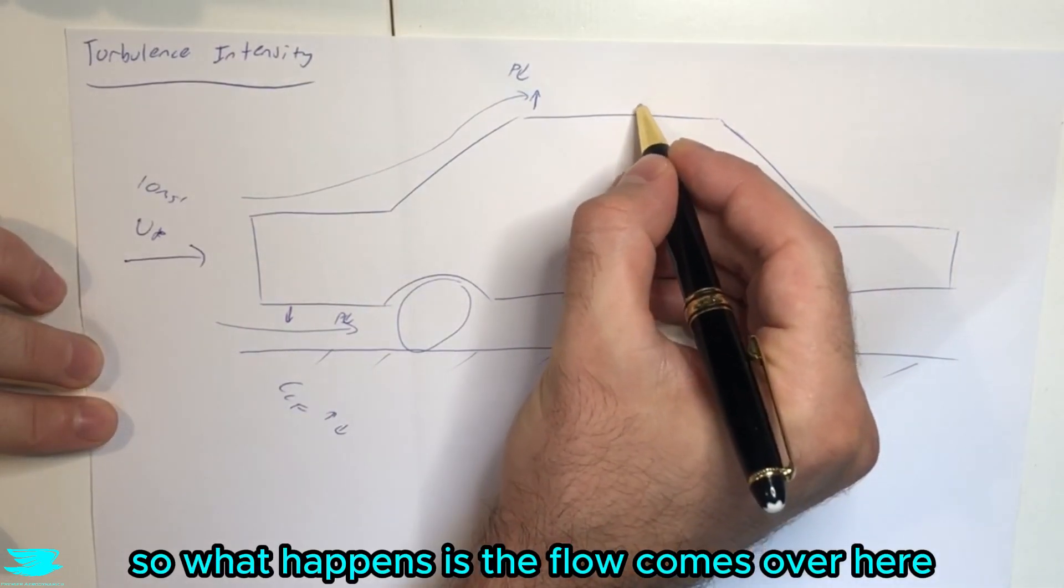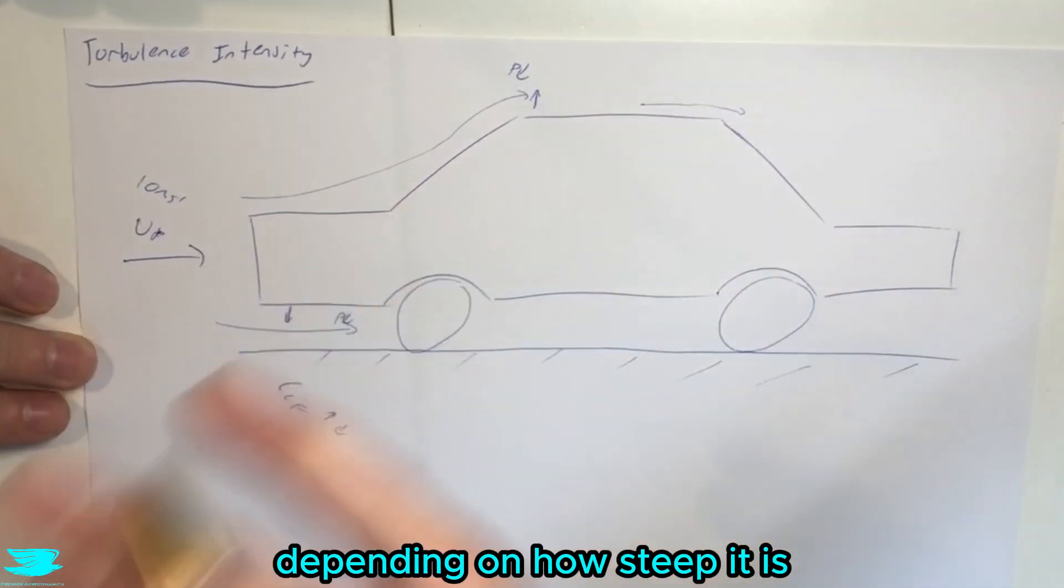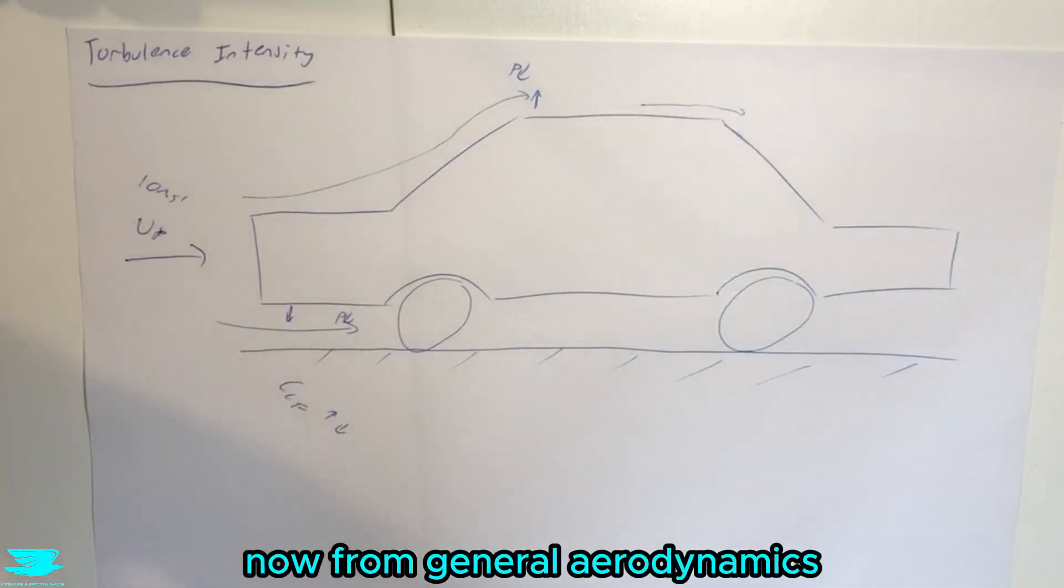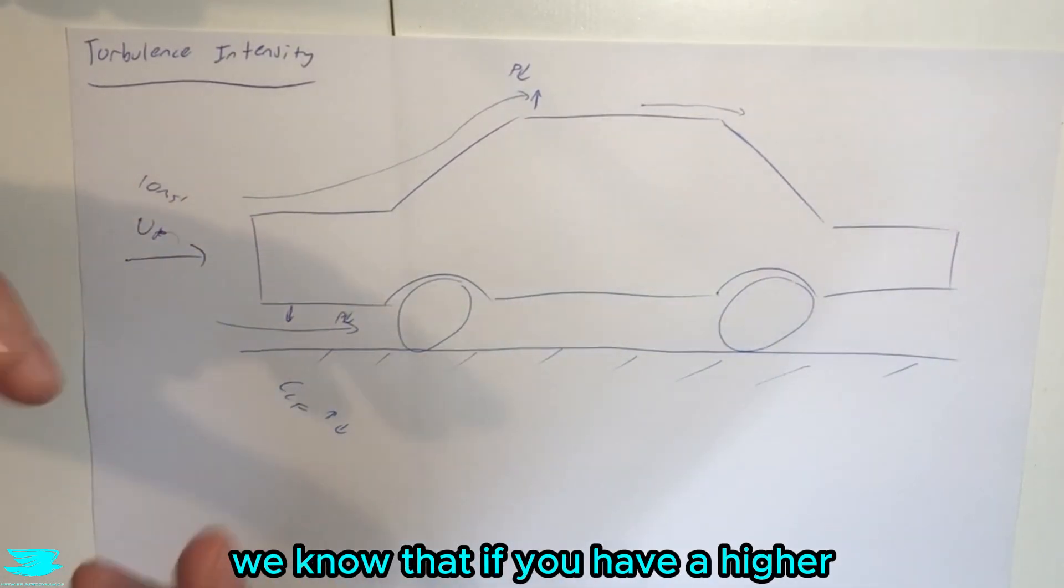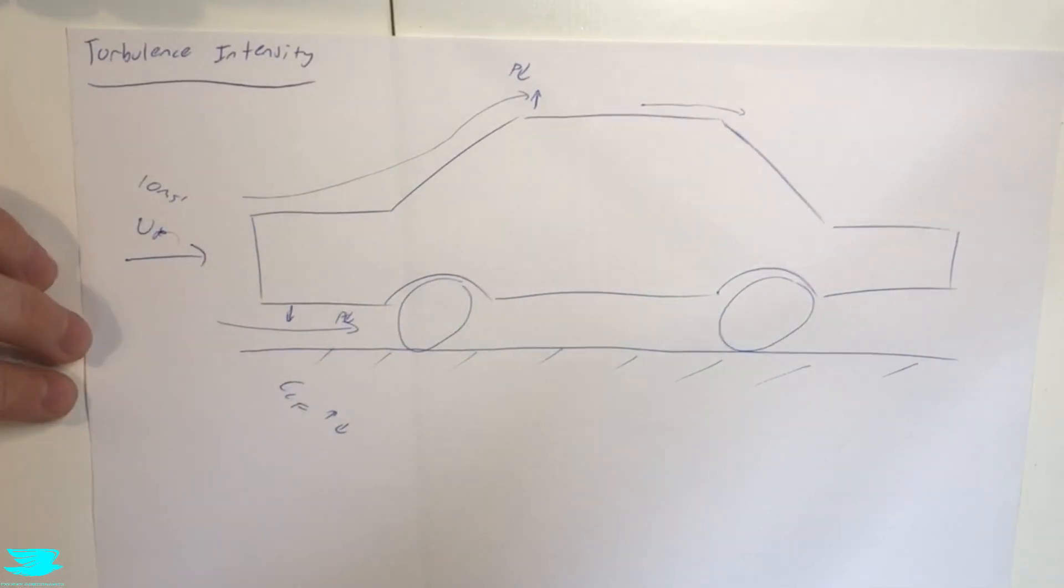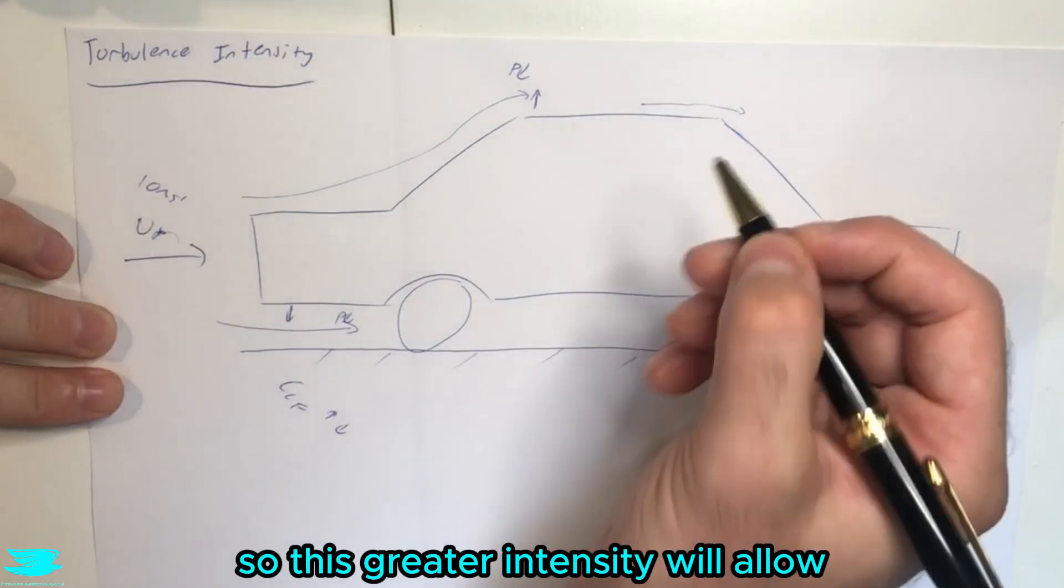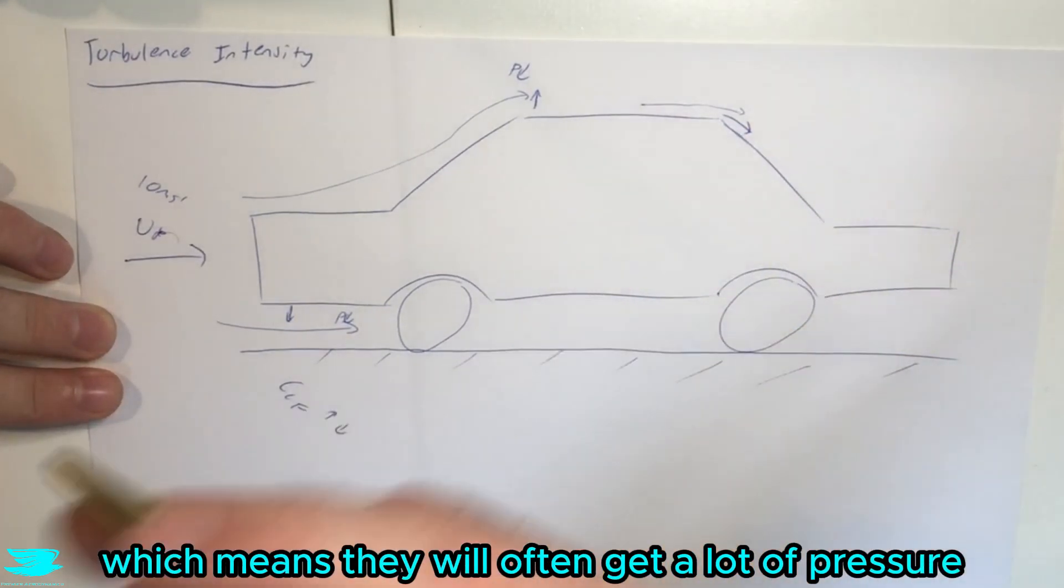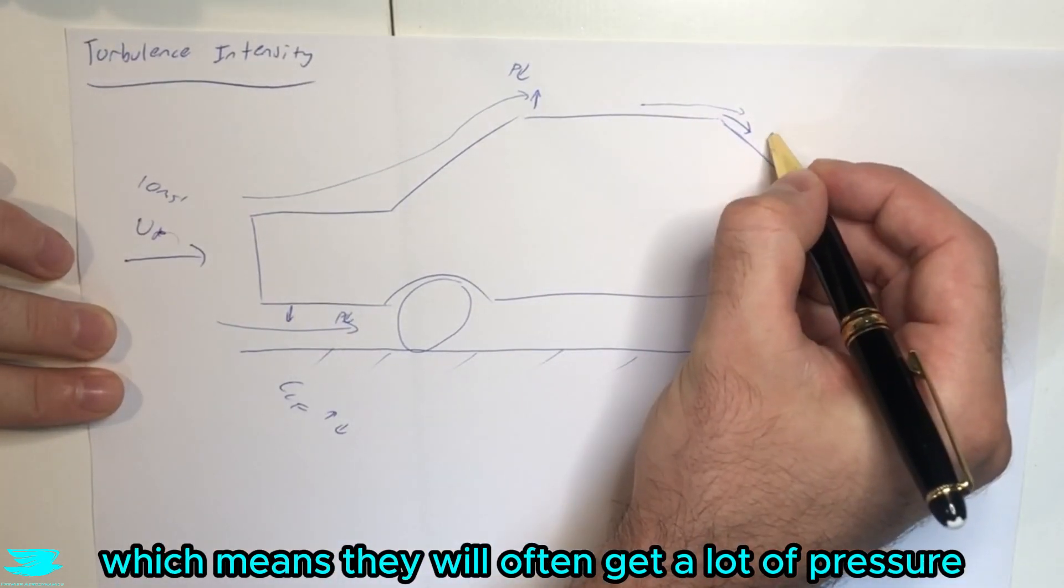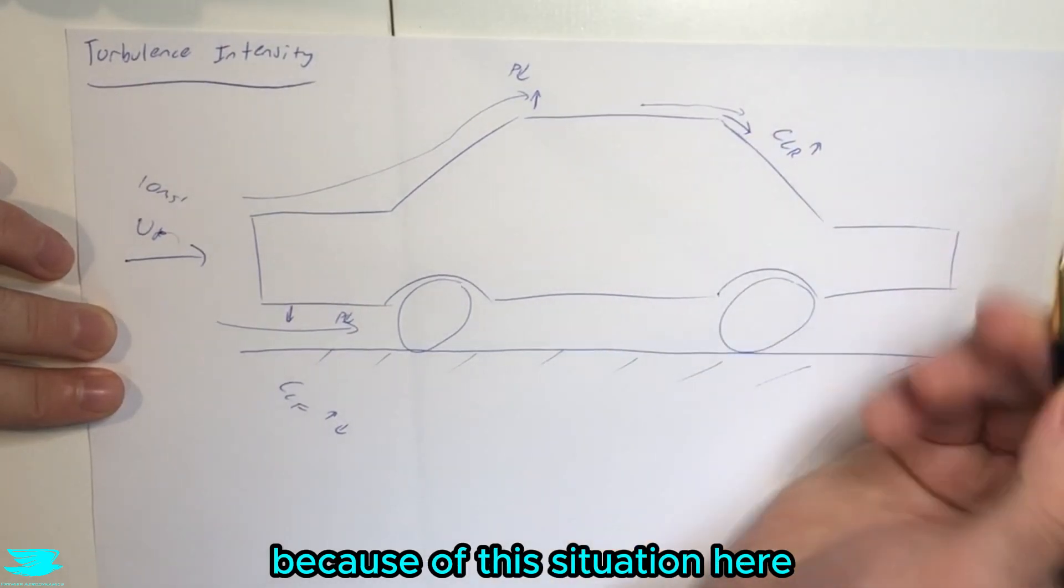So what happens is the flow comes over here and it may or may not separate over this rear window, depending on how steep it is. Now from general aerodynamics, not just for cars, but for really anything, we know that if you have a higher turbulence intensity level, the flow will more likely stay attached over a steeper angle. So this greater turbulence intensity will allow the flow to stay attached over here, which means that we will often get a lower pressure. And that means that the rear lift can increase because of this situation here.